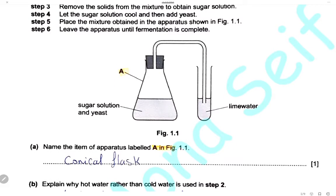The first question is: name the item of apparatus labelled A. A is of course a conical flask. Here we have the conical flask which contains the sugar solution and yeast. Ethanol will be produced inside the conical flask and carbon dioxide gas will be bubbled through lime water in this test tube so we can see the bubbles of carbon dioxide.